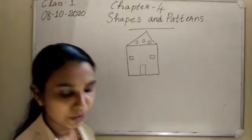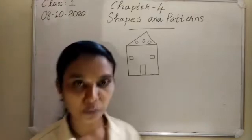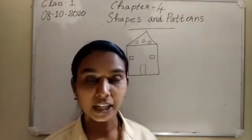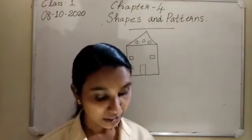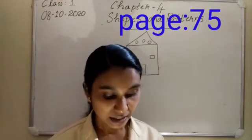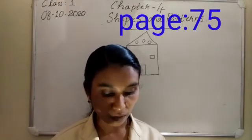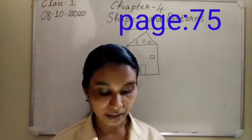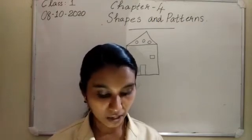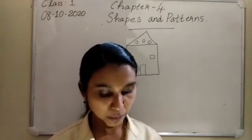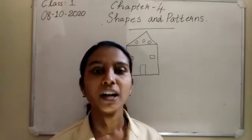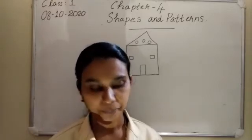Then you can do your textbook, page number 74. In your textbook there are Diwali lanterns. Color according to the given color code. Call out the name of the shape as you color it.